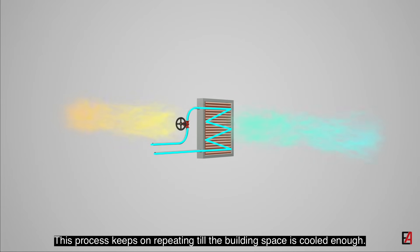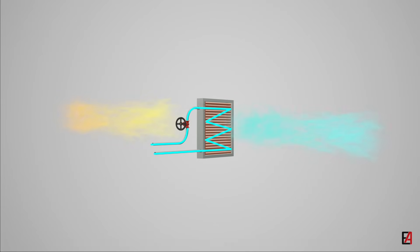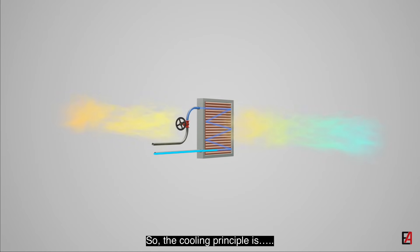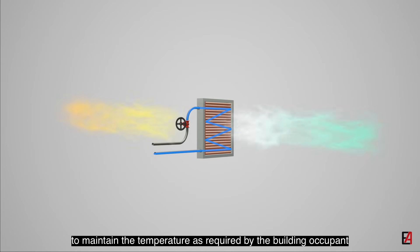This process keeps on repeating till the building space is cooled enough. At some point of time, the building space will be much colder and would require the valve on the cooling coil to be closed to maintain the desired temperature. So the cooling principle is, the cooling coil valve will be either opened or closed to maintain the temperature as required by the building occupants.